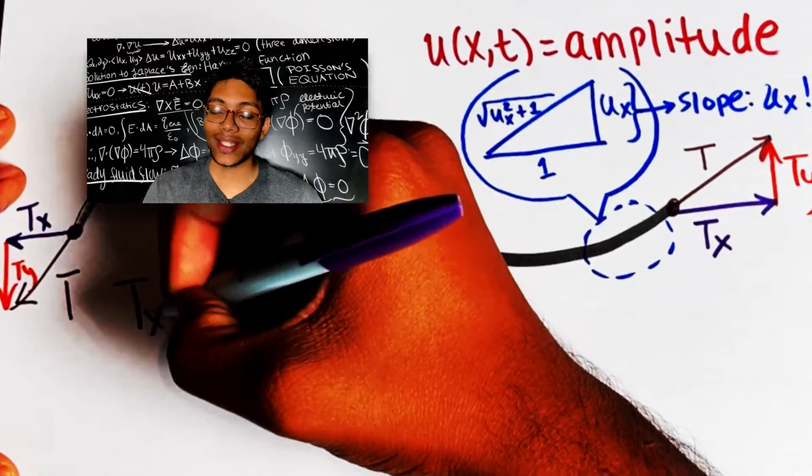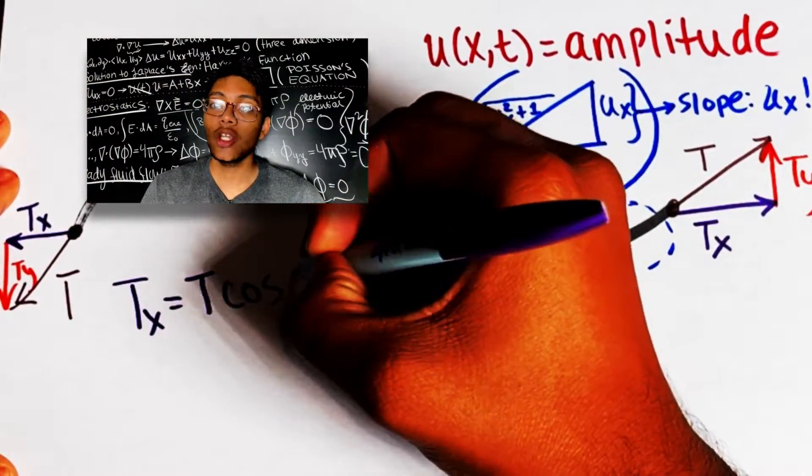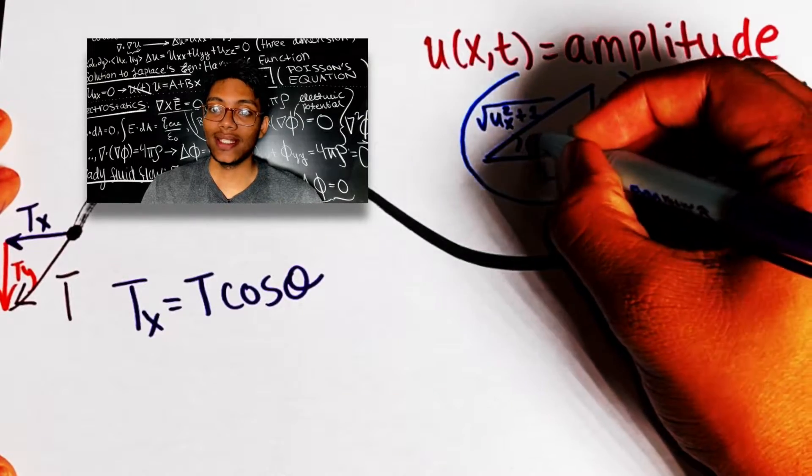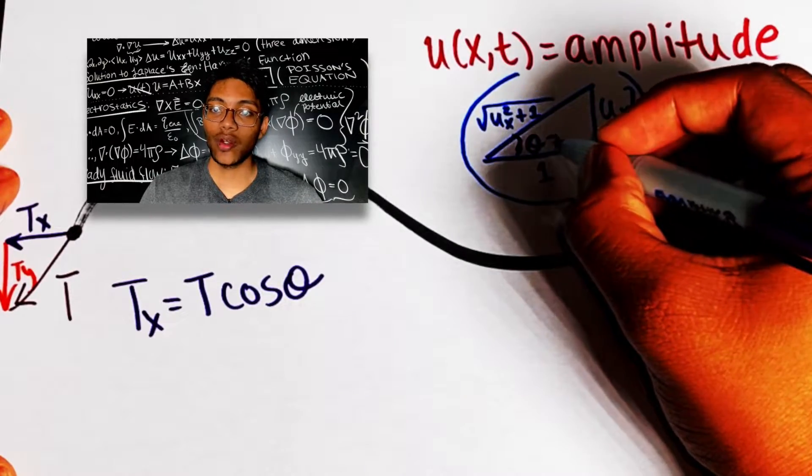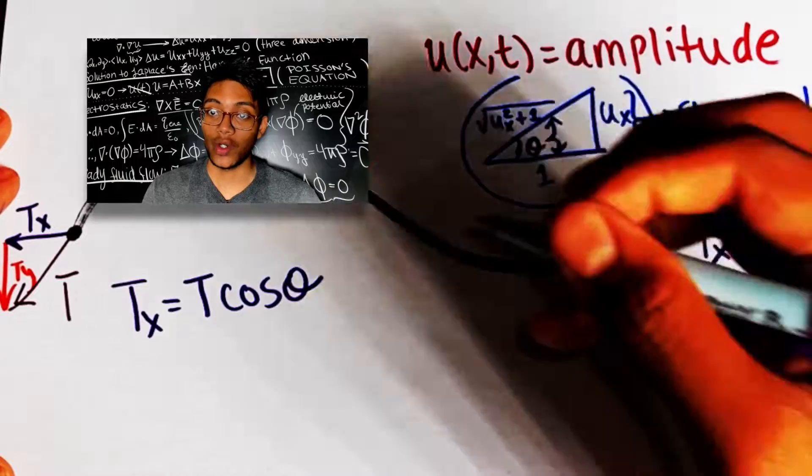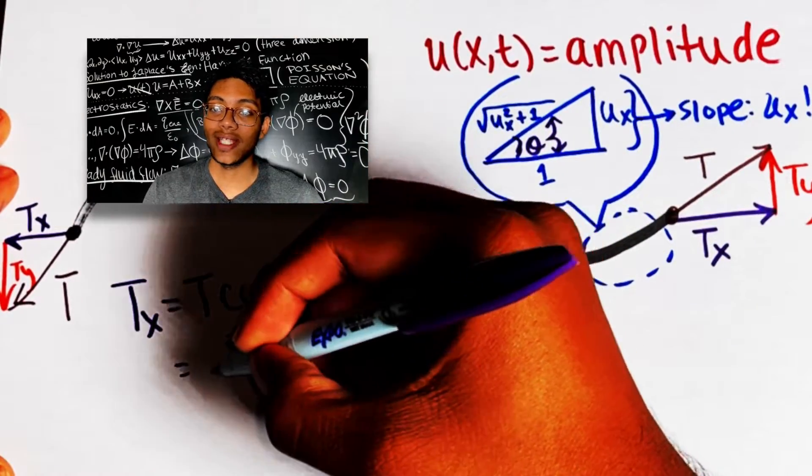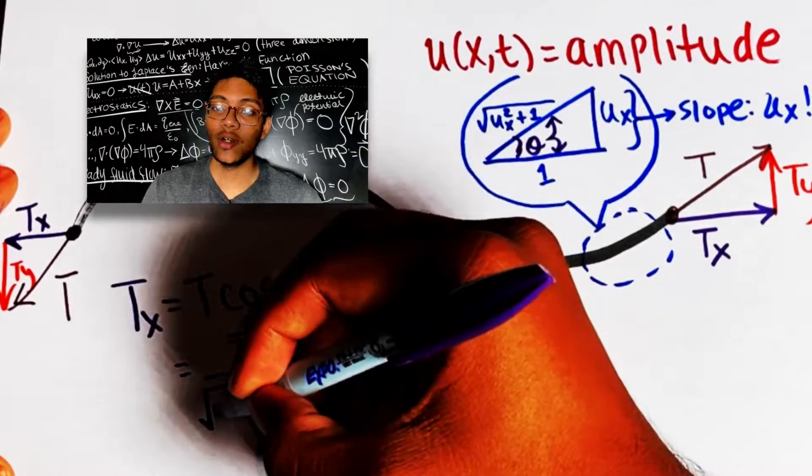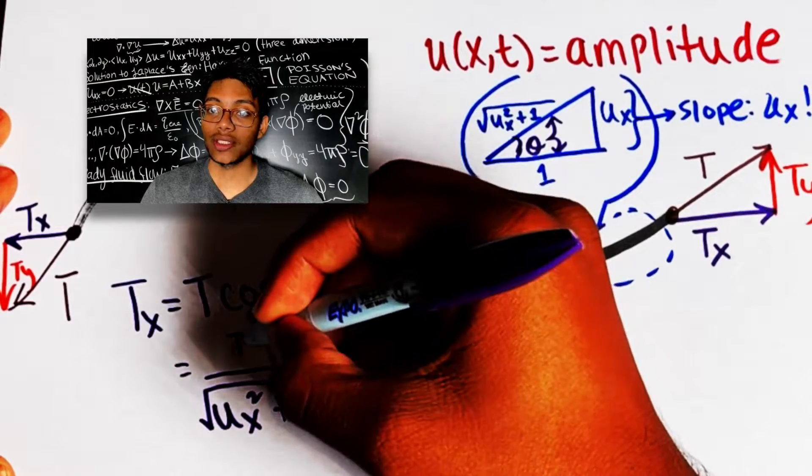What is T_x going to be? Well, it's simply going to be T cosine theta. But what's cosine theta? Cosine theta is simply 1 over the square root of u_x squared plus 1. And now we have that T_x is equal to T over the square root of u_x squared plus 1.